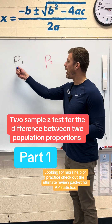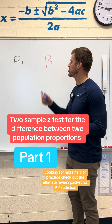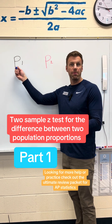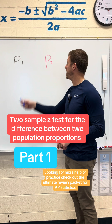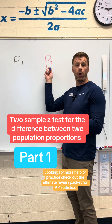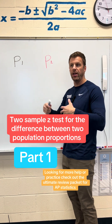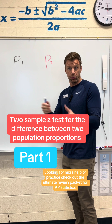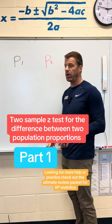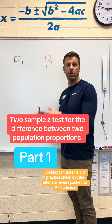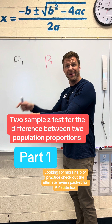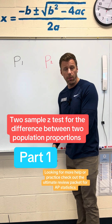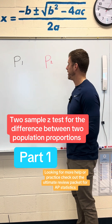So we have population proportion one and population proportion two. Maybe this is the proportion of men that have a college degree, and this is the proportion of women that have a college degree. So we're analyzing the categorical variable: do you have a college degree? And we want to see if there's a difference between the proportion of men and the proportion of women that have a college degree.